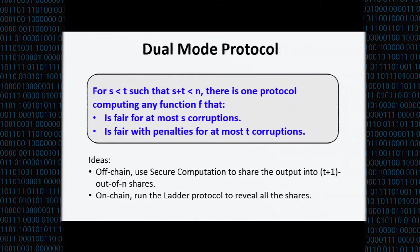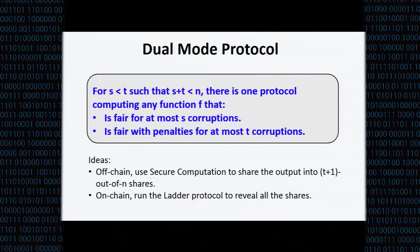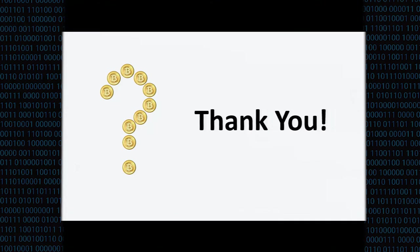We can come up with one protocol that achieves both these notions simultaneously. If the number of corrupt parties is really small, you get a fair protocol. If the number of corrupt parties is larger than a certain threshold but still smaller than a different threshold, you get fairness with penalties — the notion I described earlier. That's the summary of our results.